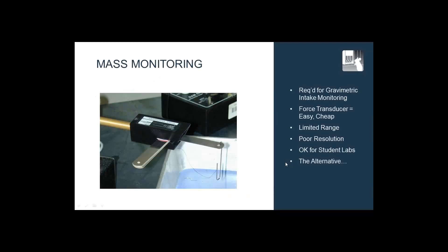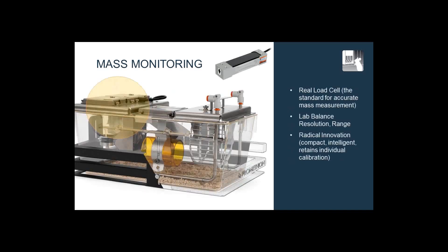Now, looking at mass monitoring, there are various ways to go about monitoring the mass of things like food hoppers, water hoppers, and habitats. The cheapest and easiest is to use an isometric force transducer — they're okay for student labs, but if you really need accuracy and resolution, you need to go to a load cell. The load cell is at the heart of lab balances; all of the commercially available lab balances by Sartorius, Mettler, and others use load cells, and they give outstanding resolution, linearity, and range. We're very proud of the mass monitors we have produced — they are very compact and retain individual calibration, which is an important feature.